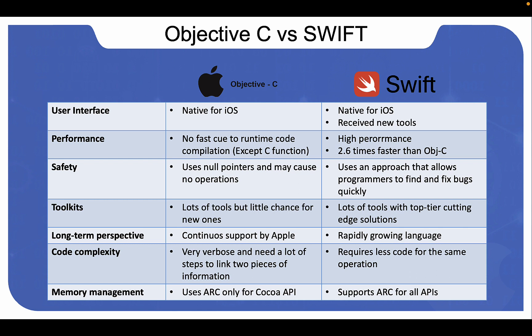So why compare Objective-C and Swift? We have two main reasons. First, they are both used to develop native iOS applications. Second, Swift is not a direct descendant of Objective-C, so there are lots of differences between them.